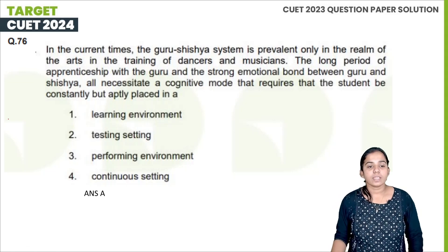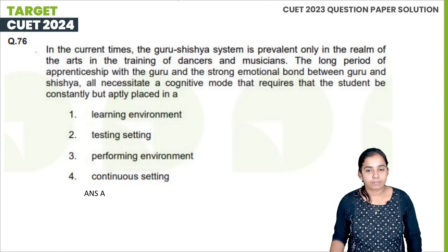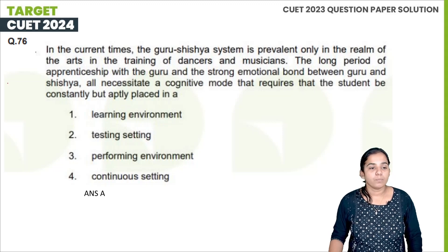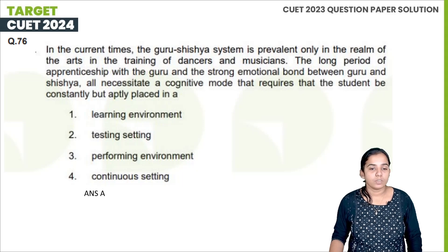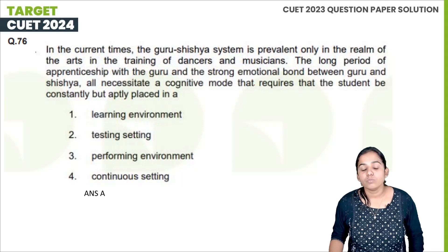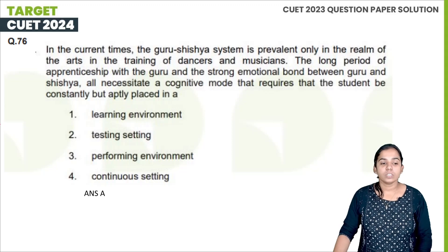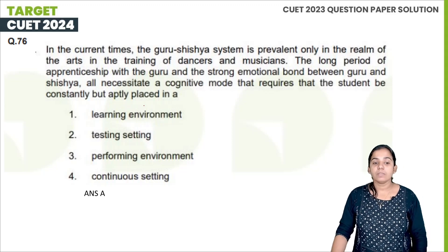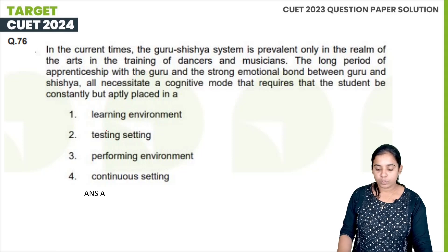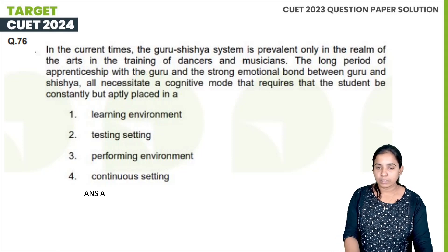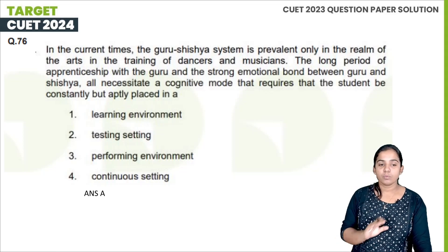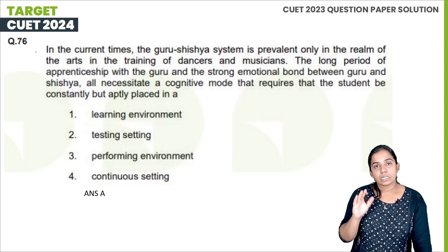In the current times, the guru-shishya system is relevant only in the realm of the arts in the training of dancers and musicians. The long period of apprenticeship and the strong emotional bond between guru and shishya are necessary so that the student is constantly but aptly placed in a learning environment.